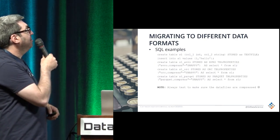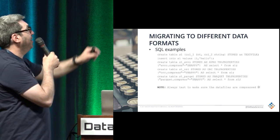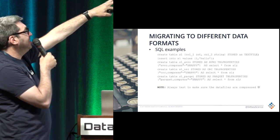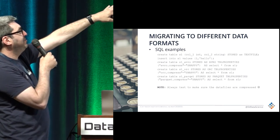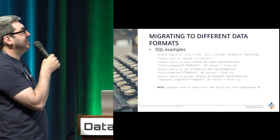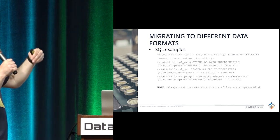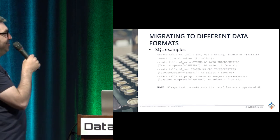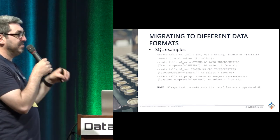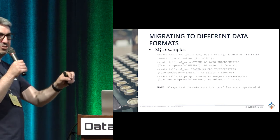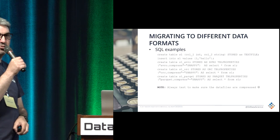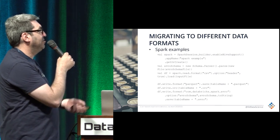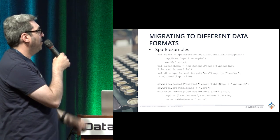Migrating from one format to another is straightforward. Take a text file as the source table S1: create a table called S1_Avro selecting from S1, specifying Avro format with Snappy compression. Same for ORC, same for Parquet. One thing we've been burned by a couple of times: always test to make sure the data files are actually compressed. Even if the file name says Snappy compression, verify it really is — there are ways to check that. The same migration is easy in Spark as well.